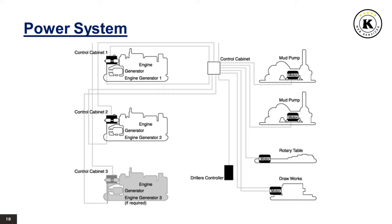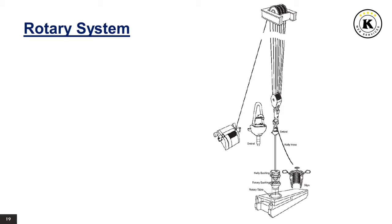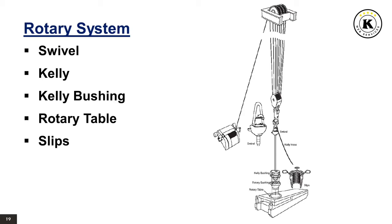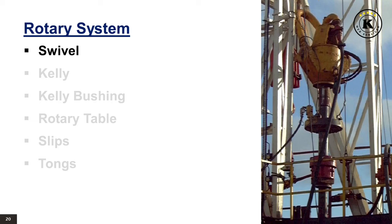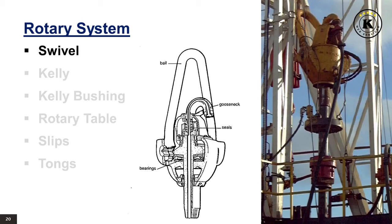Rotary System. The rotary system on a drilling rig causes the drill bit to rotate at the bottom of the wellbore. The rotary system is composed of swivel, kelly, kelly bushing, rotary table, slips, and tongs. The swivel supports the drill string and allows rotation, while also allowing the passage of drilling fluid from the rotary hose into the drill string. The swivel performs a very tough job, supporting loads measured in hundreds of tons, with the string rotating at 200 or more RPM, and abrasive drilling fluids pumped through it at up to 1,000 gallons per minute at pressures that can exceed 3,000 PSI.